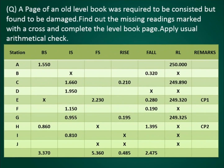A page of an old level book was required to be completed but found to be damaged. Find out the missing readings marked with a cross and complete the level book page, applying the usual arithmetical check. In the question, a table has been given and some of the readings were missing.